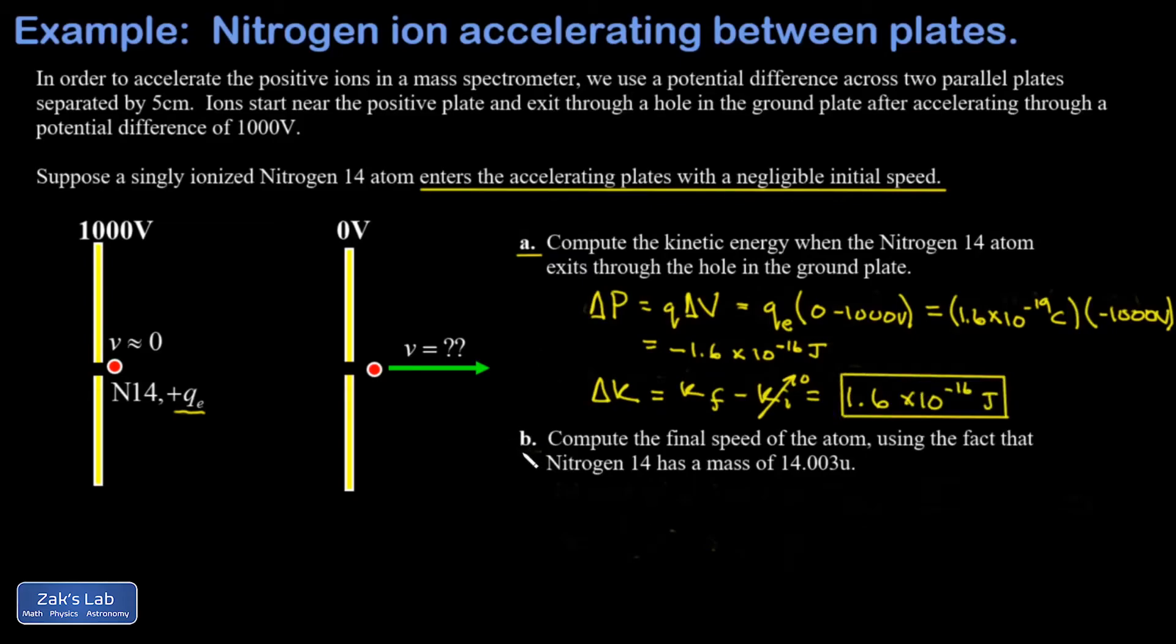Now we want the final speed of the atom using the fact that nitrogen-14 has a mass of 14.003 atomic mass units. The first thing we have to do is get the mass in kilograms. An atomic mass unit is 1.66 times 10 to the negative 27 kilograms. If I do some formal unit analysis, the atomic mass units cancel out and I'm left with kilograms. My final mass is 2.32 times 10 to the negative 26 kilograms.